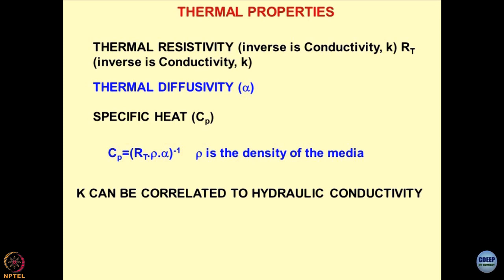There are three properties I would like to define for geomaterials. First, thermal resistivity RT and thermal conductivity K, which are the inverse of each other. Second is thermal diffusivity — how easily heat gets diffused from one point to another. This is similar to the coefficient of consolidation CV. Thermal diffusivity indicates how easily the heat flux can diffuse from one point to another in geomaterials. Accumulation of heat is not a good idea because if heat flux accumulates, the temperature of geomaterials will rise.